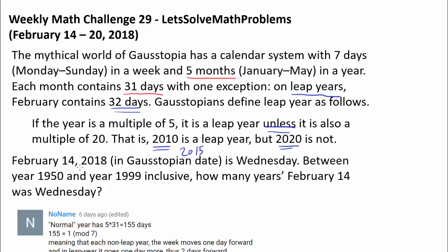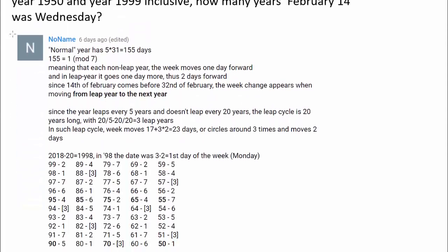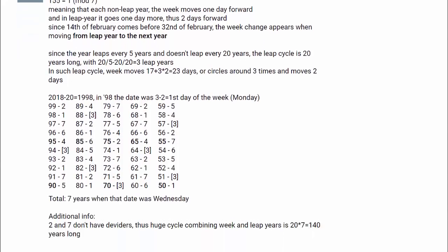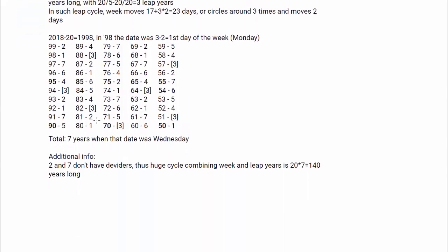Let's read on. February 14, 2018 — which is for some reason the date that this weekly math challenge started — was Wednesday in Gaustopia. Between year 1950 and year 1999 inclusive, how many years was February 14th a Wednesday? Before I share my solution, I want to recognize the winner, No Name, who was the very first person to correctly answer this question with the correct answer of 7 years.